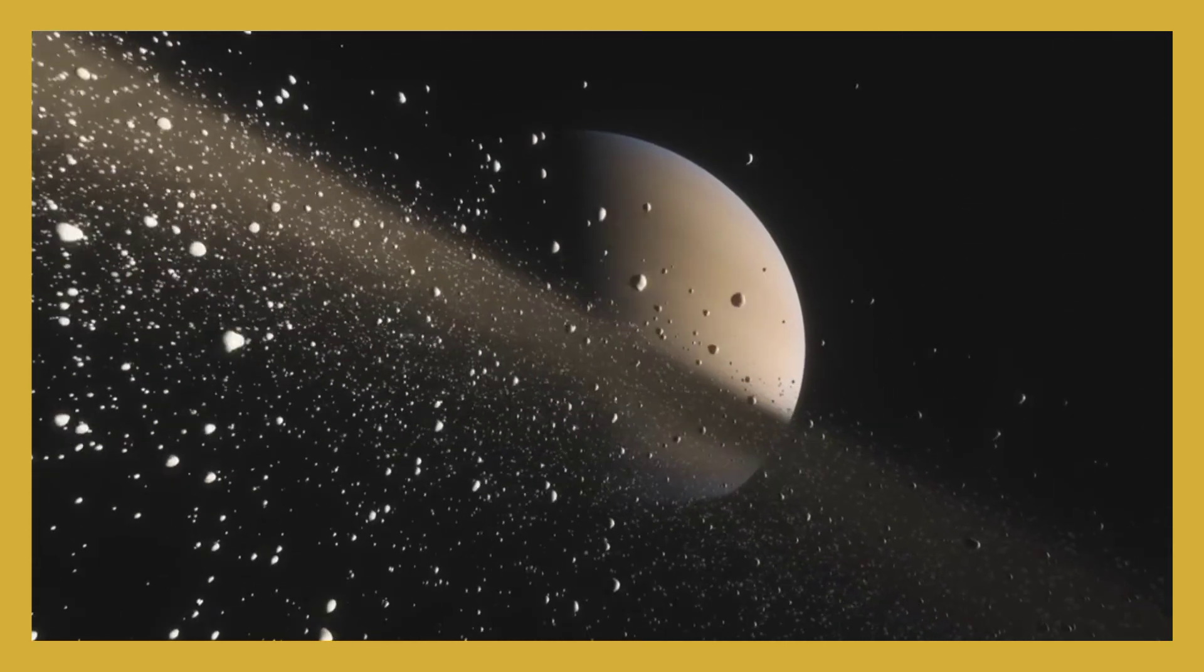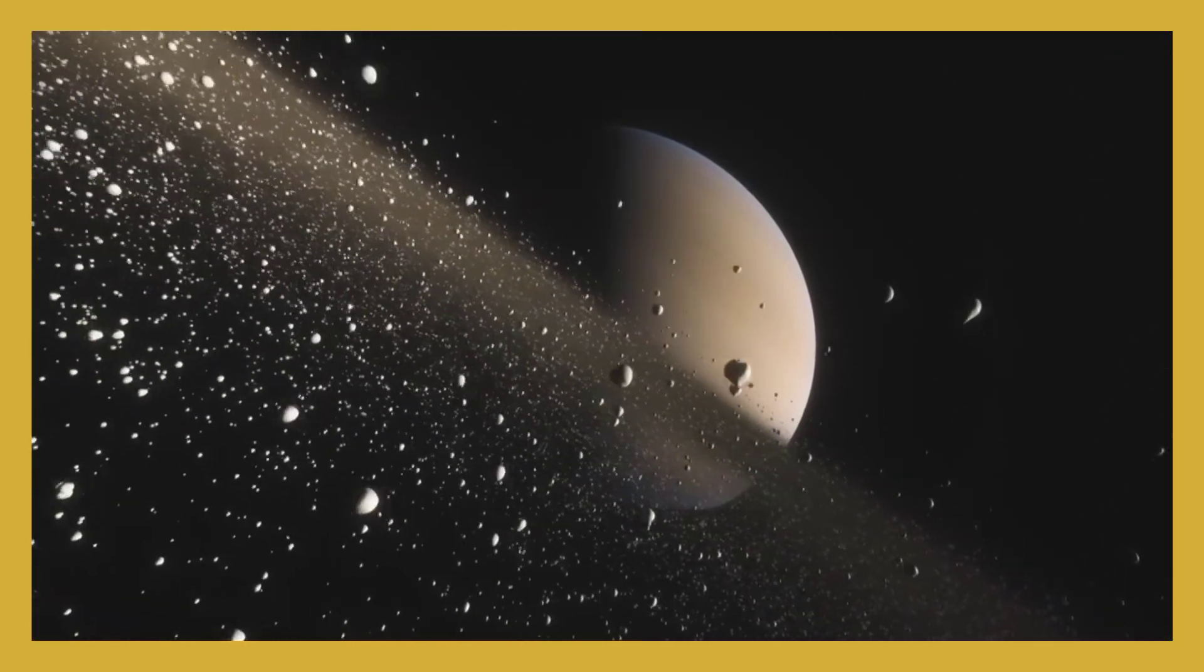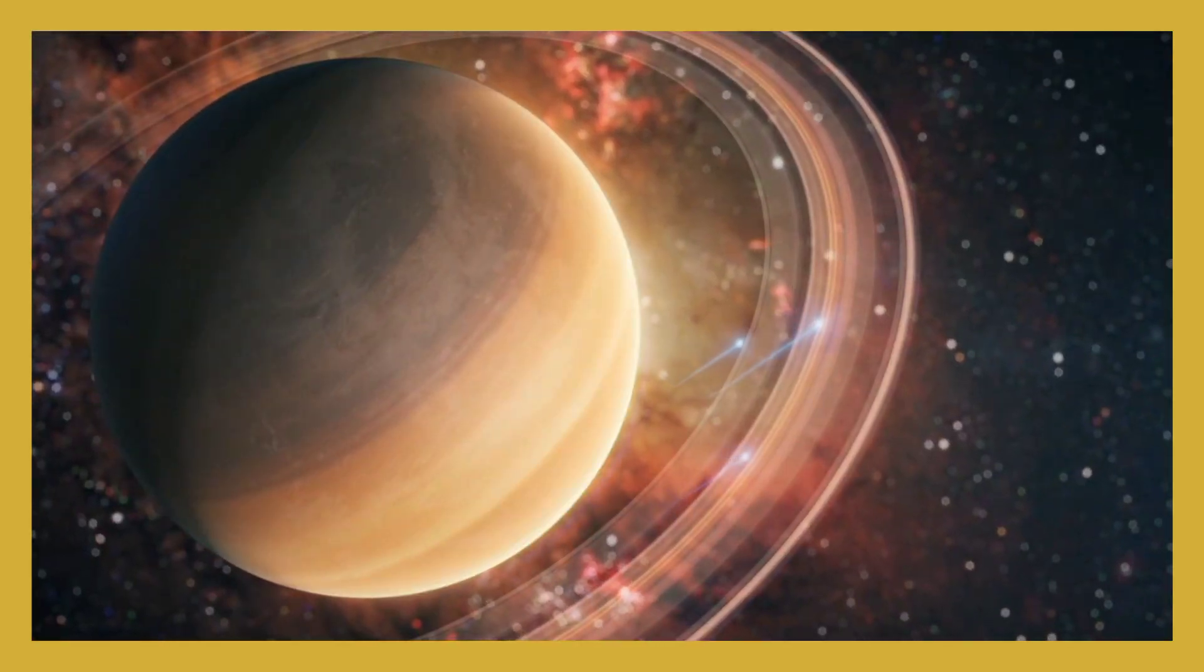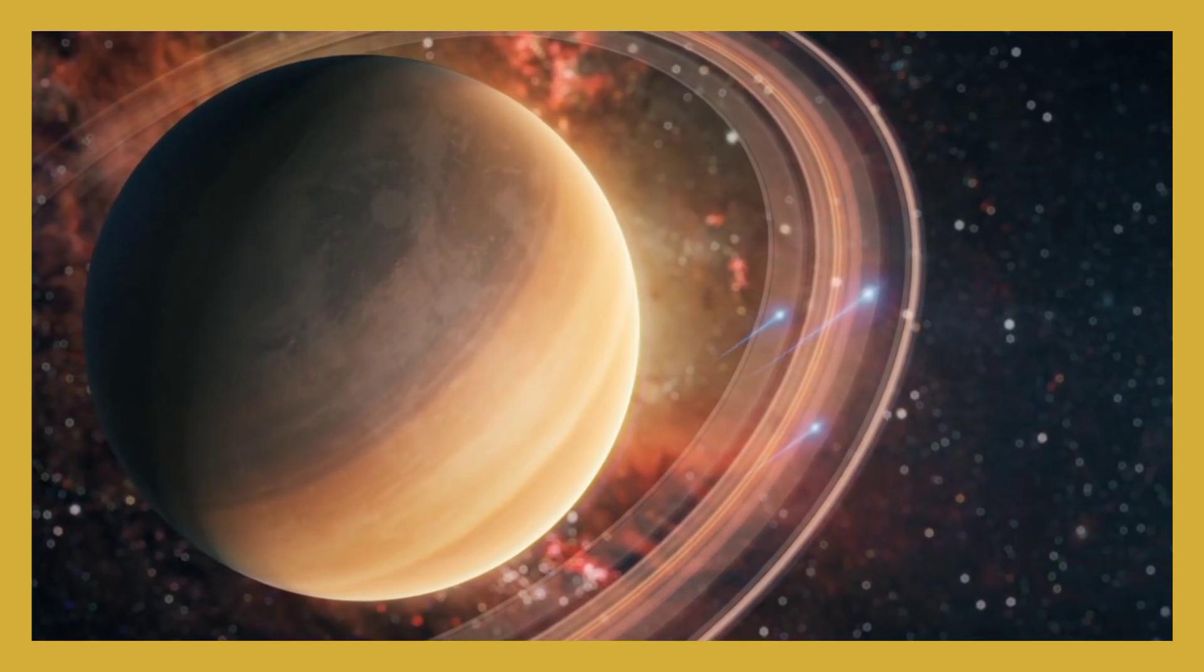Saturn's rings go round and round, with Titan's lakes where rain falls down. Enceladus sprays out icy geysers, so many moons, we can't list.